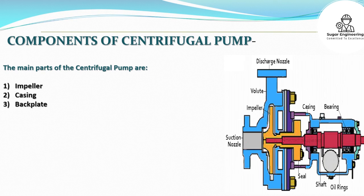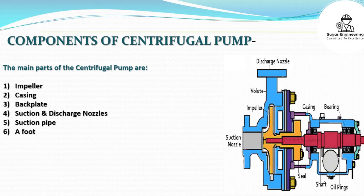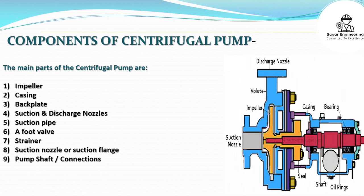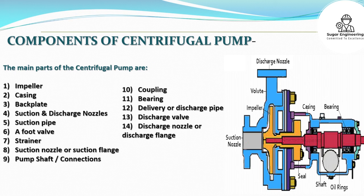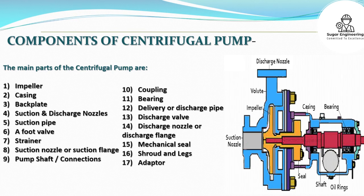The main parts of the centrifugal pump are: 1. Impeller, 2. Casing, 3. Backplate, 4. Suction and discharge nozzles, 5. Suction pipe, 6. Foot valve, 7. Strainer, 8. Suction nozzle or suction flange, 9. Pump shaft and connections.